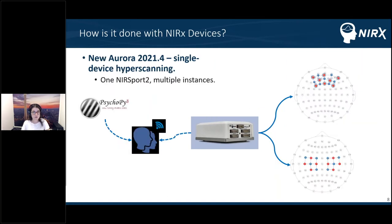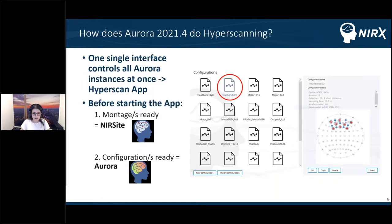So what is new in this Aurora 2021.4 version? The possibility of single device hyperscanning. Starting from this version released a few weeks ago, we are able to split one single NIRSport 2 between two different subjects. This NIRSport 2 connects to the computer using the Wi-Fi network, and we can have the two different subjects in two different configuration setups, running two different triggers simultaneously.